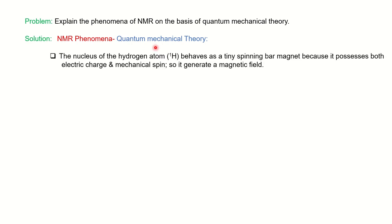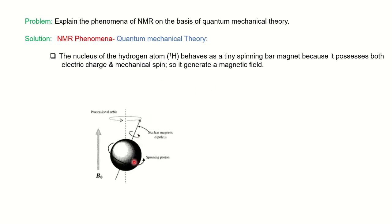First, NMR is the nuclear magnetic resonance. Nuclear means we are going to study the nucleus, and in this topic we are going to discuss a nucleus which is the proton. Based on the proton NMR, we will discuss the quantum mechanical theory of NMR phenomena. The proton behaves like a tiny spinning magnet because it possesses both electrical charge and mechanical spin, so it will generate a magnetic field.